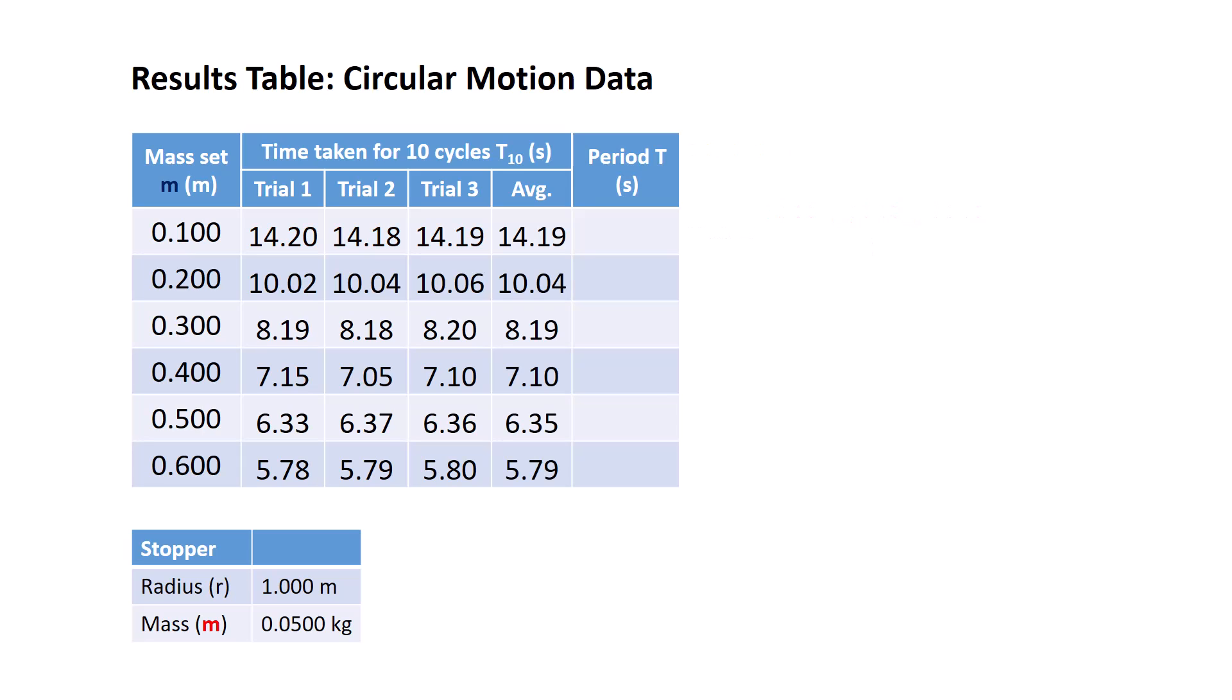Next we want to work out the period. The average values we just calculated are the measured times on average for 10 revolutions or cycles for each particular mass set. However, we want for our purpose of calculation the period, just the time for 1. So in order to change from an average of 10 cycles to a single period, we take each individual average and divide it by 10.